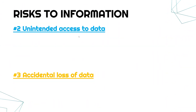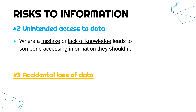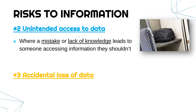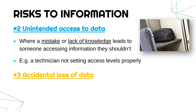The next two risks are unlikely to be deliberate. The first is unintended access to data — again about viewing data, not necessarily changing it. This is often where a mistake or lack of knowledge leads to someone accessing information they shouldn't have. A good example of a mistake is somebody leaving a bag on a train with their work laptop in it — if it doesn't have a password, someone who picks it up can look at the data. An example of lack of knowledge causing unintended access might be a technician not knowing how systems work and not setting access levels properly — maybe setting the most recent apprentice to the same access level as the CEO. So this is not always malicious; it can be just mistakes.